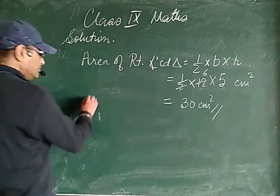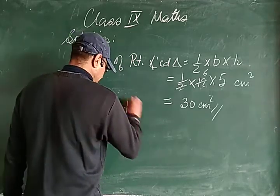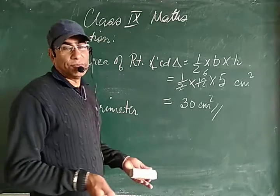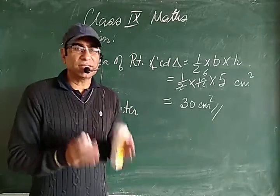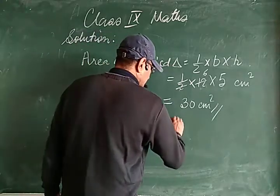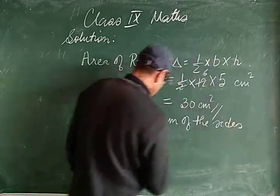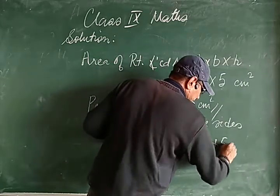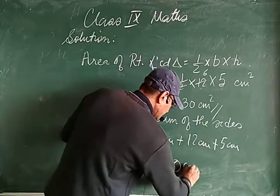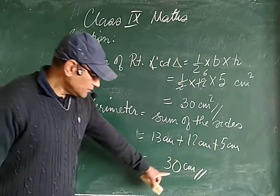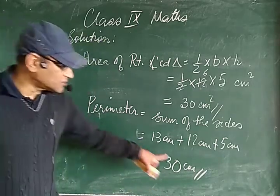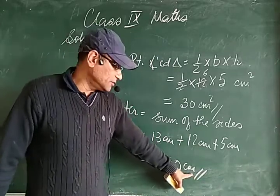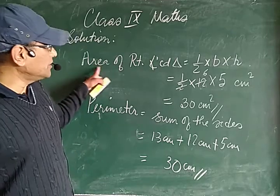Now the second part asks for the perimeter. Perimeter means sum of the sides of a geometrical figure. Here it's a triangle, so perimeter = sum of all sides = 13 cm + 12 cm + 5 cm = 30 centimeters. Note the unit of perimeter is centimeters, not centimeters square — that unit is for area.